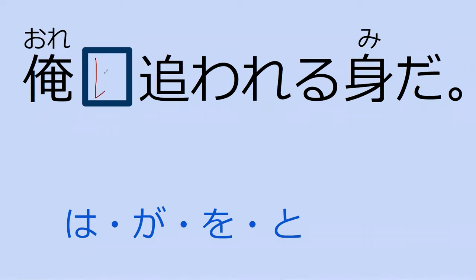If I'm saying 'I'm a wanted person,' you'd have wa here: 'Ore wa owaremono da' — I am a wanted person. If you want to say somebody wants you, that person who wants you would have ni. So 'ore ni owaremono da' means that is somebody I am searching for — I have a wanted notice for. That's a wanted person for me, like if I put the money down.